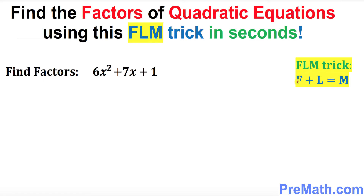What FLM means: the first coefficient plus the last coefficient must be equal to the middle one. As we can see in our example, the first coefficient is 6 and the last coefficient is positive 1. 6 plus 1 always gives you 7, isn't it?